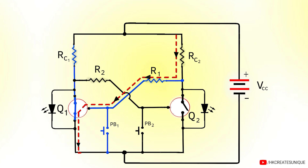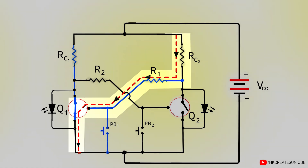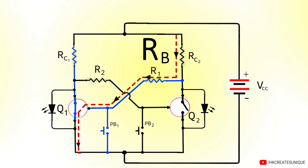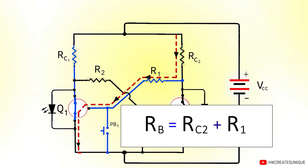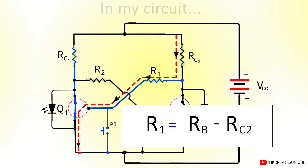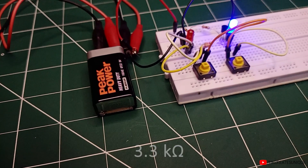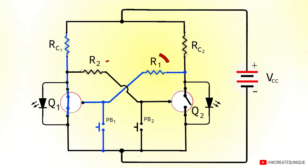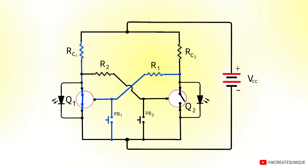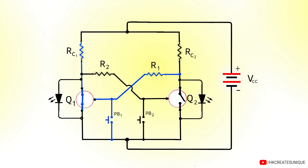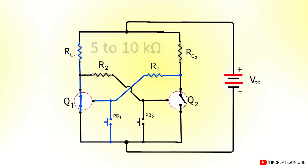The third step is to find the base resistor. Base resistance RB equals VCC minus 0.7, divided by IB. Putting in the values, we get RB = 3051 ohms. Note that in the circuit both the collector resistor and the base resistor take part in supplying base current, so the total base resistance is the sum of these two values. For Q1, RB = RC2 + R1, so R1 = RB minus RC2 = 2721 ohms. The closest standard value is 3.3 kilohms, used for both R1 and R2. If no load is connected, assume RC to be around 5 to 10 kilohms and then solve for R1 and R2.